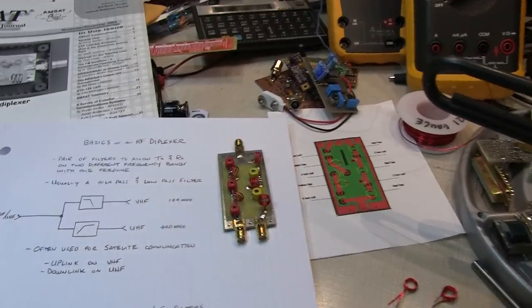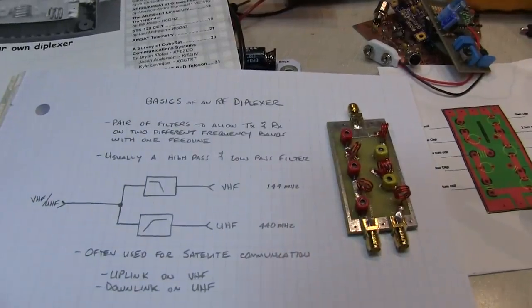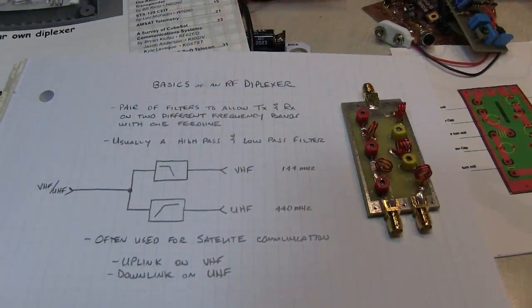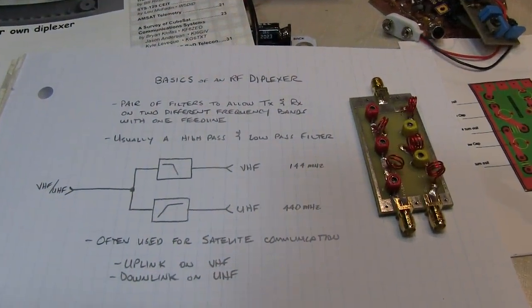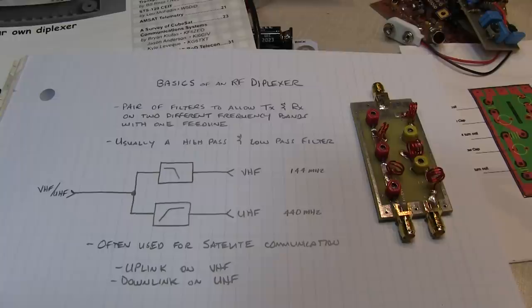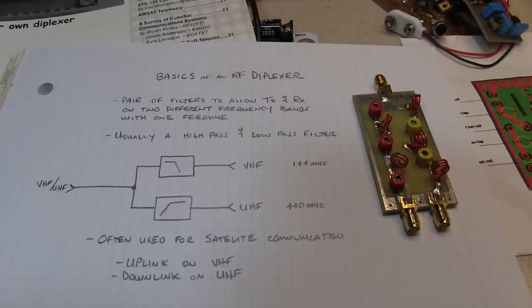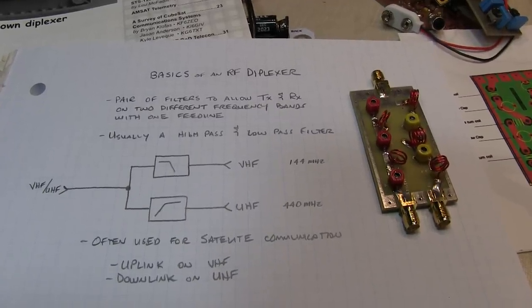In today's video, we're going to talk about the basics of an RF diplexer. A diplexer is typically just a pair of filters that allow both transmit and receive on two different frequency bands through one feed line.